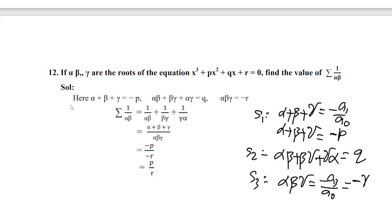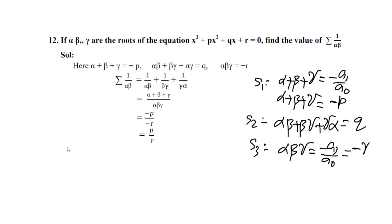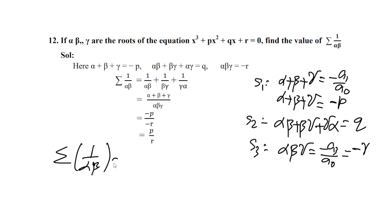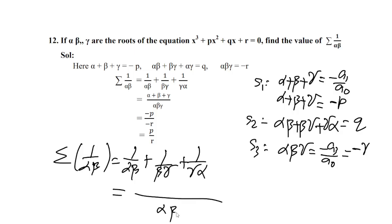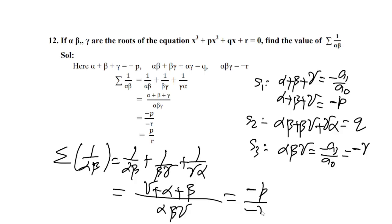The S1, S3 approach: α + β + γ = −p/a₀ = −p. S2 = αβ + βγ + γα = q/1 = q. S3 = αβγ = −r/1 = −r. The result combining S1 and S3 gives p·S3, confirming the symmetric function.